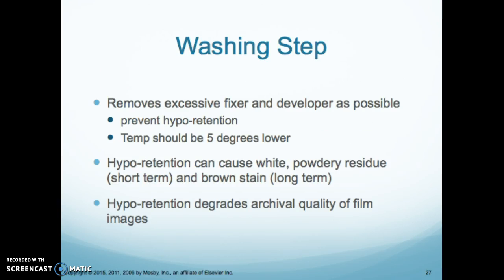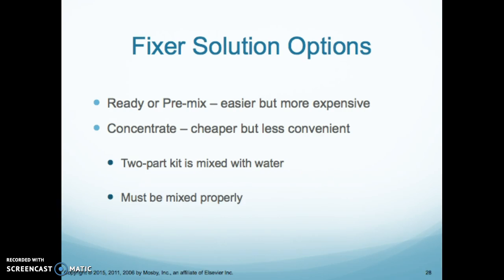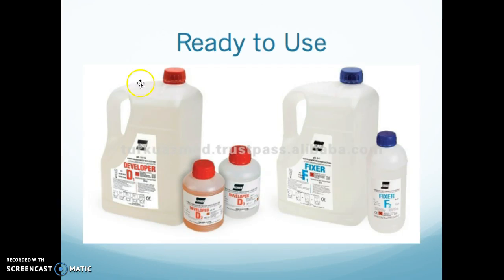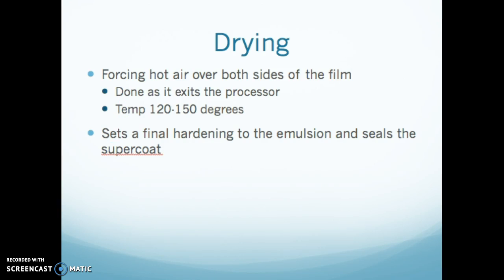The washing step removes excessive fixer and developer. The temperature should be about 5 degrees lower than the fixer. Hypo retention can cause white powdery residue and brown staining, so we don't want that. The developer and fixer come pre-mixed and are poured into the tanks. The last step is drying, which forces hot air over both sides of the film at typically 120 to 150 degrees Fahrenheit — it's the final hardening of the emulsion and seals the supercoat.